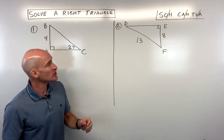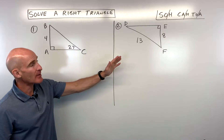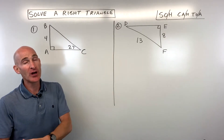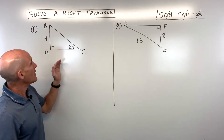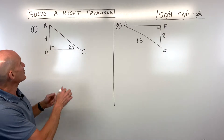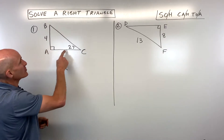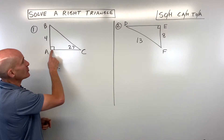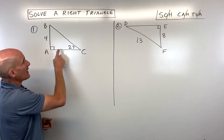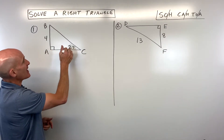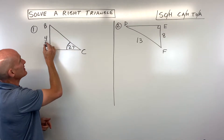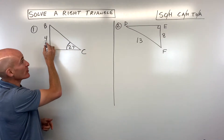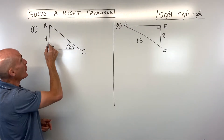Let's go through a couple of examples together, and then you can do a couple on your own for practice. In this first problem, we have a right triangle with a 90-degree angle. We're given that one angle is 27 degrees and the side across from it is 4.